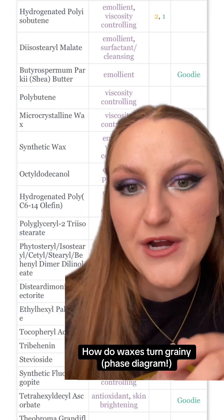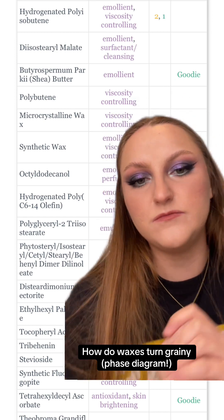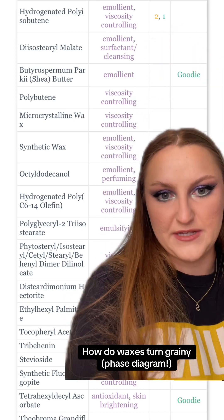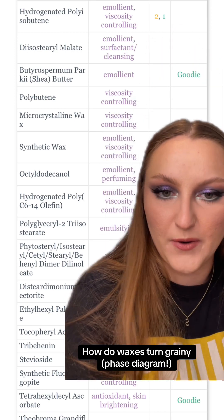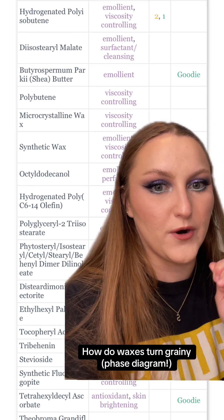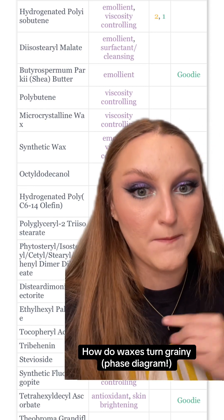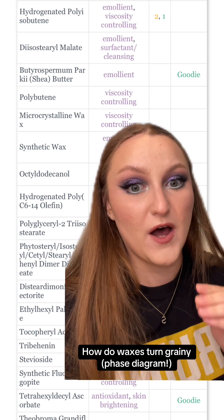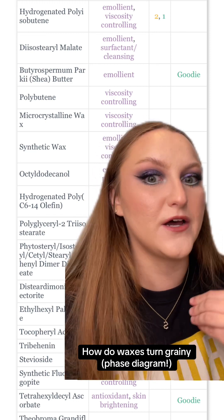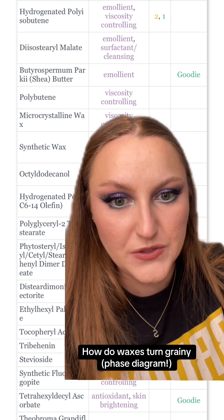Now this is the ingredient list for the Rode peptide treatment — this is the majority of the ingredients list. There are a couple of things missing at the bottom, but I don't think they're that important for my general point, which is there's not much of a hydrated network. There's basically just a blend of different butters and oils.